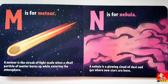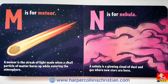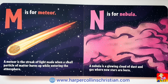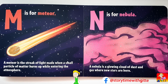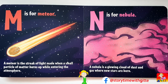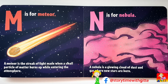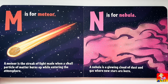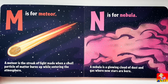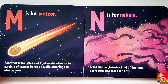M is for Meteor. A meteor is the streak of light made when a small particle of matter burns up while entering the atmosphere. N is for Nebula. A nebula is a glowing cloud of dust and gas where new stars are born.